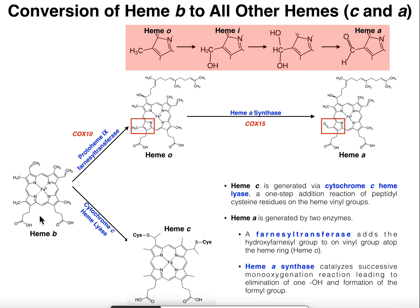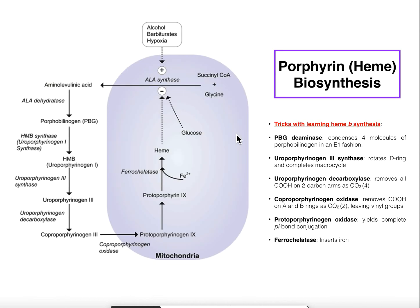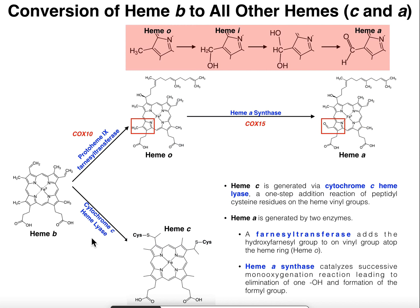In the previous video, we saw the biosynthesis of this molecule, which is called heme B. Now normally you'll just see this referred to as heme, but as we'll find in this video, there are actually several classes of hemes. This one that we generated at the end of the previous video, which was protoheme, its other name is heme B — just one of the forms of heme. We saw through a series of seven or eight enzymes, depending on how you look at it, heme can be synthesized from eight molecules of delta-aminolevulinic acid, or ALA. We also saw that heme synthesis actually spanned two subcellular compartments. At least in eukaryotes, it spans partially in the mitochondria and then also out into the cytoplasm.